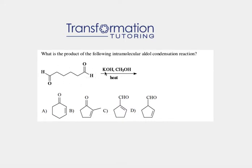The first thing to notice is that this reagent is a base, K⁺OH⁻, and what will happen first is we will deprotonate an alpha hydrogen. An alpha hydrogen is a hydrogen that is on the carbon next to the C=O double bond. My molecule is very symmetrical, so it has two C=O double bonds that are the same.